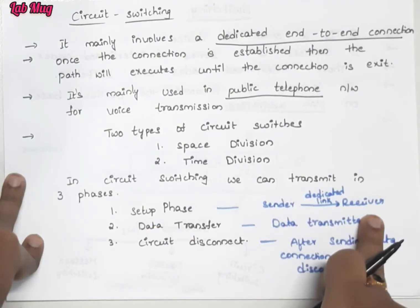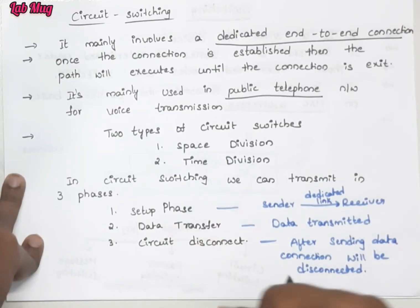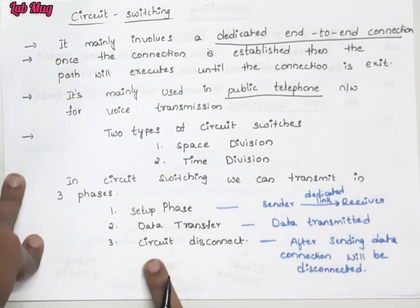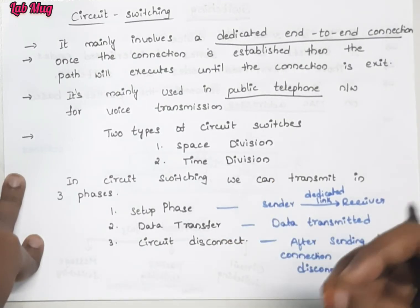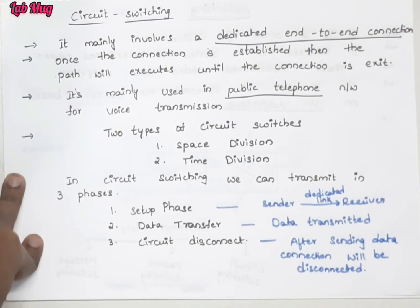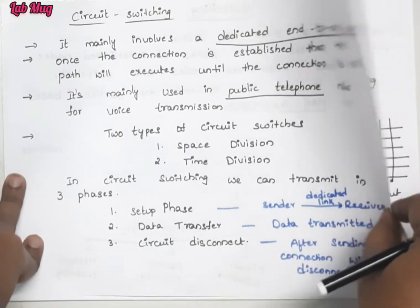When we call, we press the landline number and establish the connection. That's the first one - we establish a dedicated link from sender to receiver. Next, once the connection is established, we transfer the data. Then circuit disconnect. After the complete process is done, we disconnect the phone. After sending data, the connection will be disconnected. This is what we see in circuit switching - two types: space division switching and time division switching.